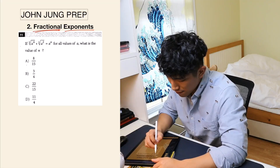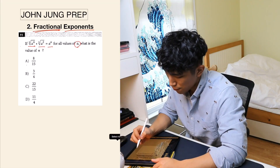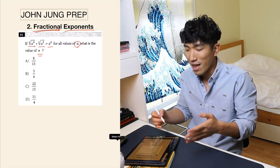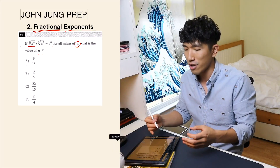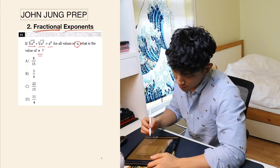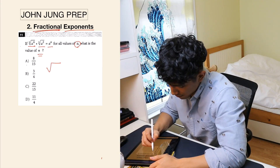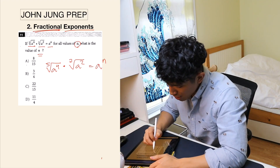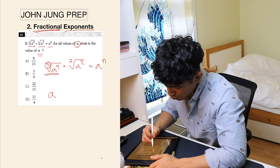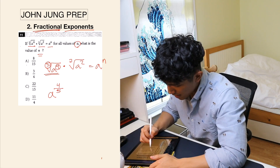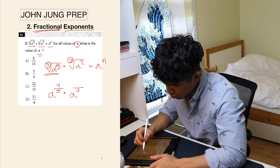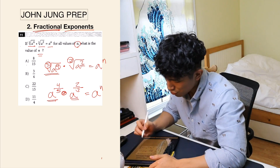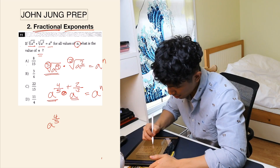Let's look at this question: if (fifth root of a^4) × (cube root of a²) = a^n for all values of a, what's the value of n? You want to use fractional exponents. The fifth root of a^4 becomes a^(4/5) — five is the denominator, four is the numerator. And the cube root of a² becomes a^(2/3) — three is the denominator, two is the numerator. Since the bases are the same and we're multiplying, we add the exponents: a^(4/5 + 2/3) = a^n.